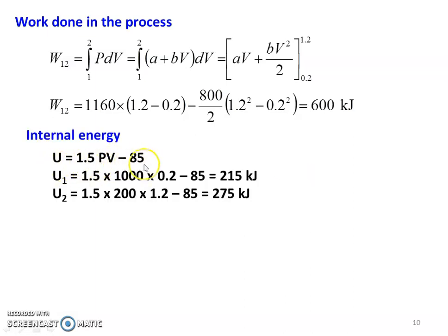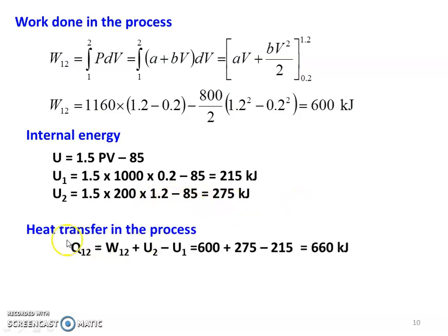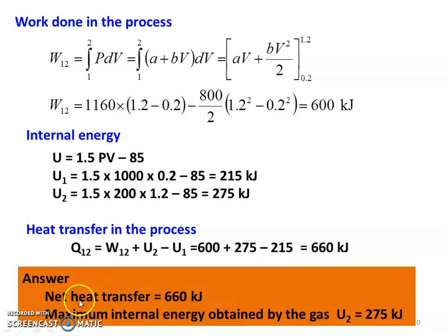Work done W equals integral of PdV equals integral of (A plus BV) dV equals A·V plus B·V²/2 from 0.2 to 1.2. Substituting A equal to 1160 and B equal to minus 800: work done equals 600 kilojoules. Internal energy: U1 equals 1.5 into 1000 into 0.2 minus 85 equals 215 kilojoules. U2 equals 1.5 into 200 into 1.2 minus 85 equals 275 kilojoules. Net heat transfer Q12 equals W12 plus (U2 minus U1) equals 600 plus 60 equals 660 kilojoules. Maximum internal energy U2 equals 275 kilojoules.